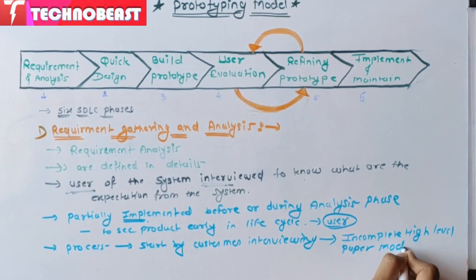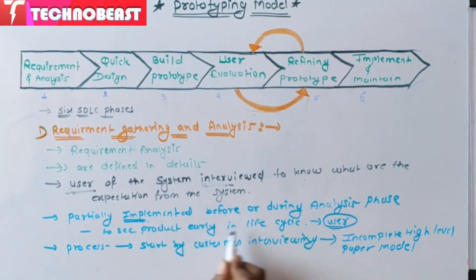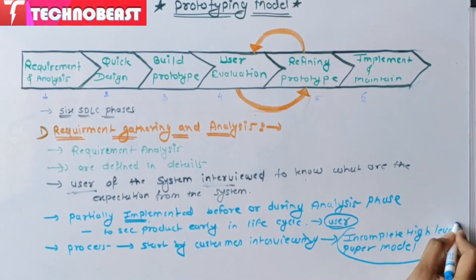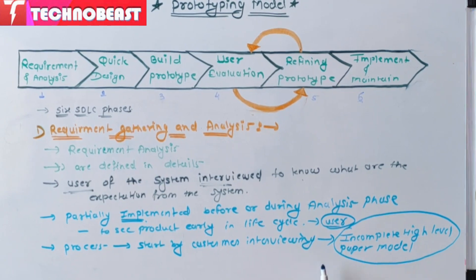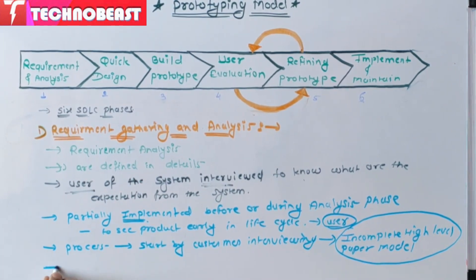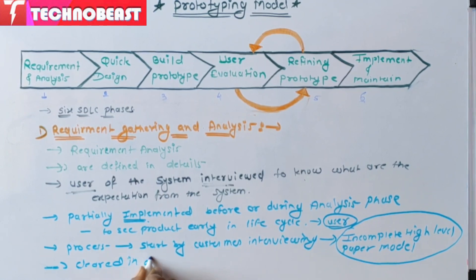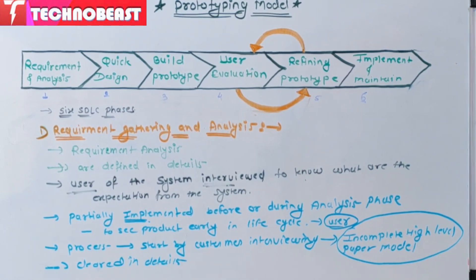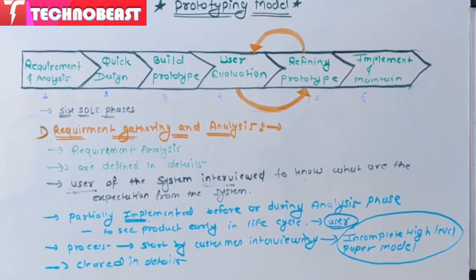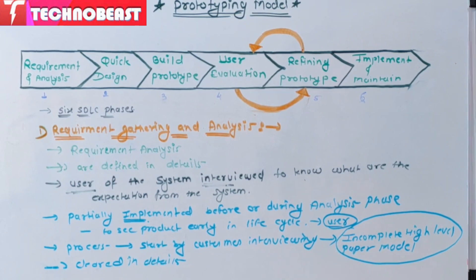On the basis of customer interviewing, they prepare one incomplete high-level paper model. Here, identification of product requirements is cleared in detail. It is done through the interview of some product future users and other members of the department.